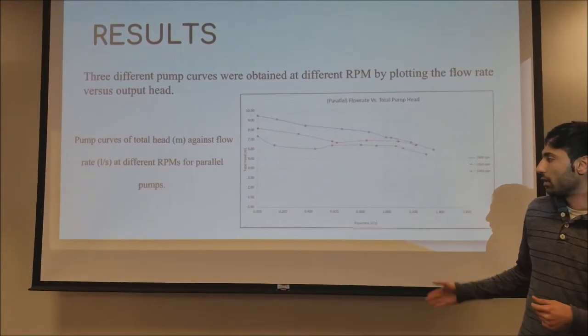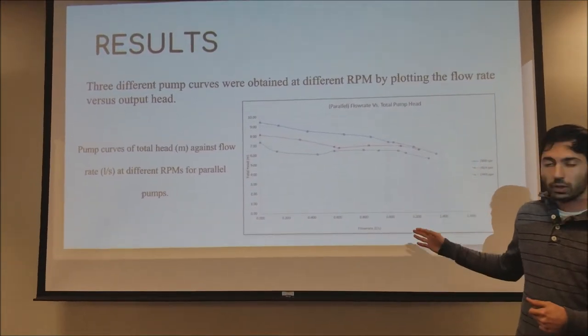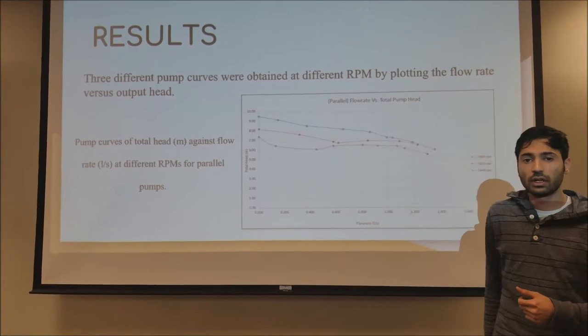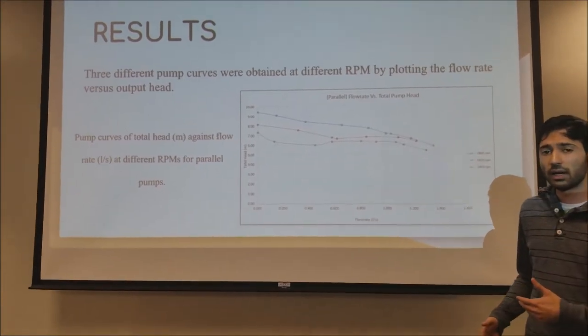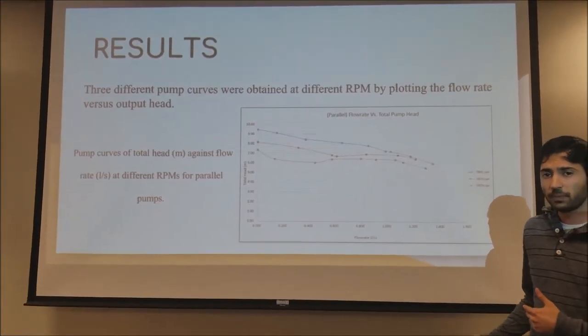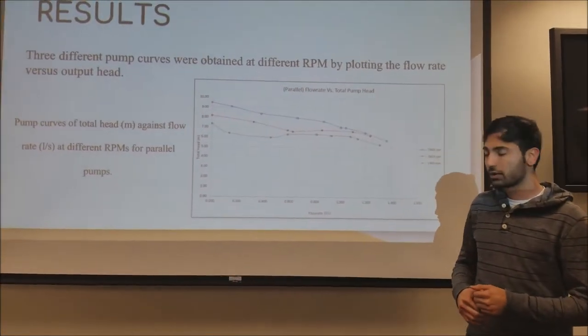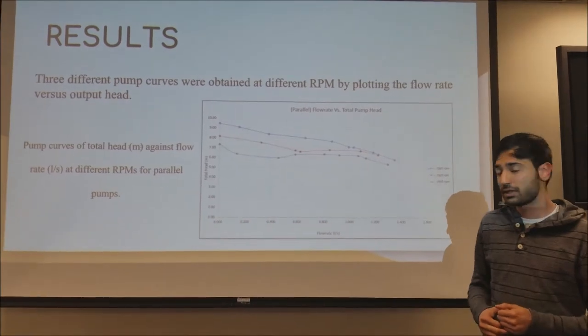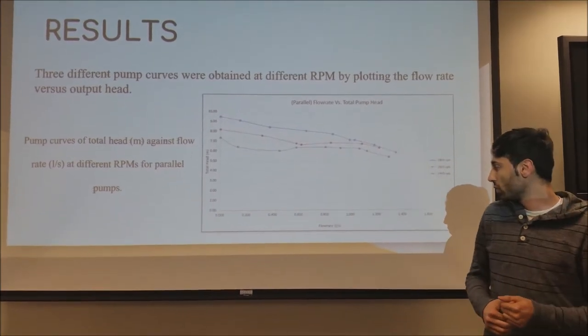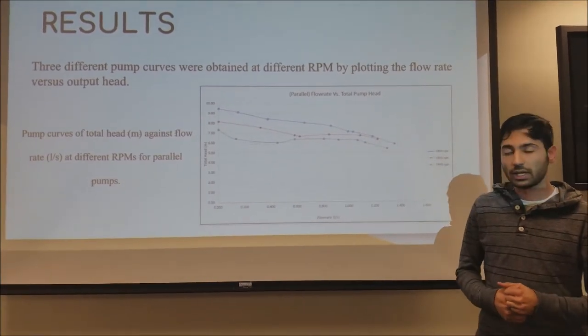As you can see, as the flow rate increases, the total combined head is decreasing. Note that the flow rate for this parallel pump configuration is at 1.2 liters per second.